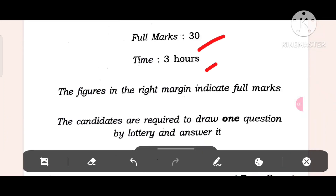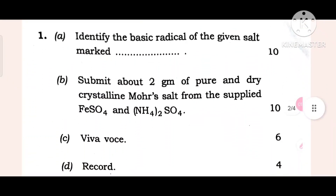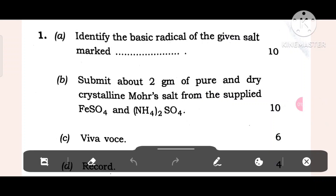The figures in the right margin indicate full marks. The candidates are required to draw one question by lottery and answer it. So look at this. Question 1: Identify the basic radical of the given salt. Submit about 2 gm of pure and dry crystalline salt from the supplied FeSO4 and NH4SO4. 10 marks.